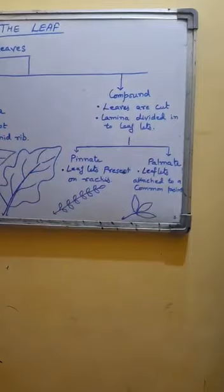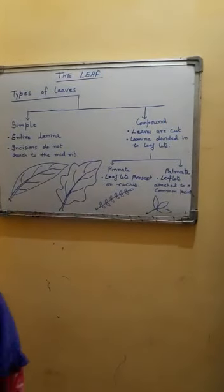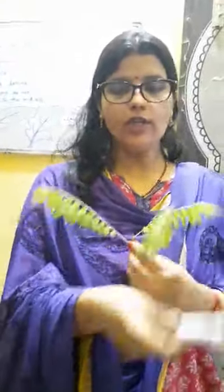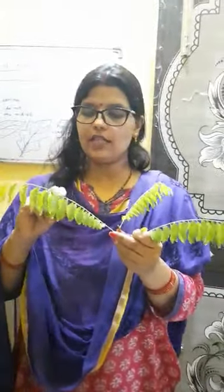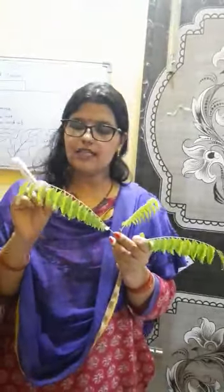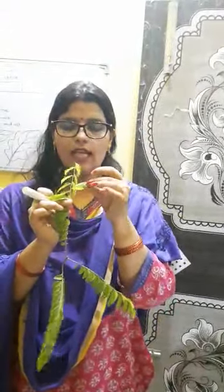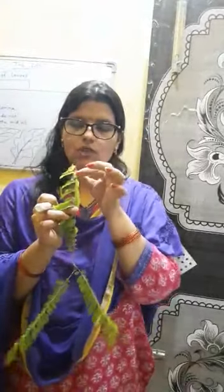Here is an example of a compound leaf — this is a neem leaf. Now what do you think? How many leaves am I taking in my hand? You might start counting — 1, 2, 3... up to about 13 on one side and 12 on the other. But these are not all leaves. This is a single leaf and these are leaflets. A single leaf has various cuts, and what we generally consider as a single leaf is actually a part of this large leaf. So these are leaflets.